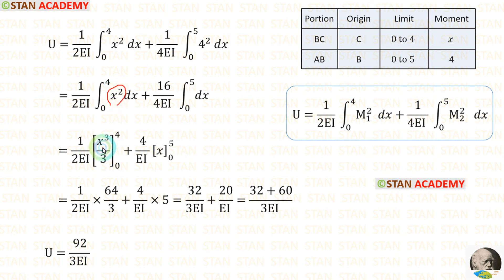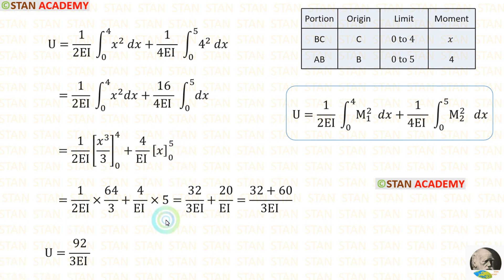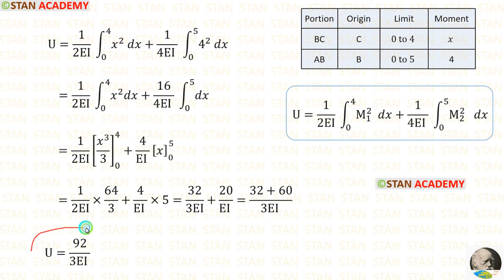When we integrate x², it will be x³/3. When we integrate dx, we will get x. Now we apply the limits. No need to apply the lower limits because the lower limit is 0 — both terms become 0. Only apply the upper limits: instead of x, apply 4 for BC and 5 for AB. For these two values, we take LCM and multiply by 20EI/3 on top and bottom. Finally, we get the strain energy U = 92 / (3EI).